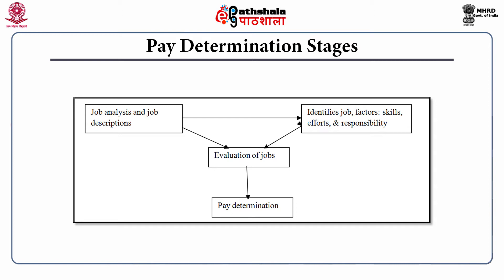Pay determination stages: Compensation executives take a number of decisions before finalizing pay rates. The first stage is job analysis and job description. The second is identifying job factors, skills, efforts and responsibility. Both of these lead to the evaluation of jobs, and on the basis of that evaluation — the worth of the job in an organization — pay is determined.